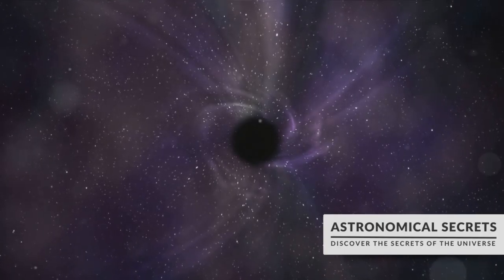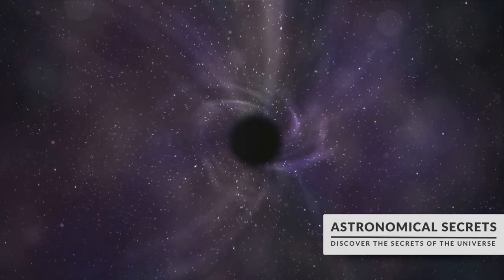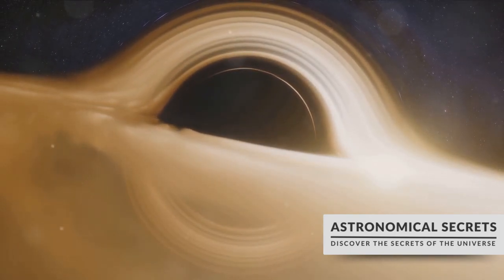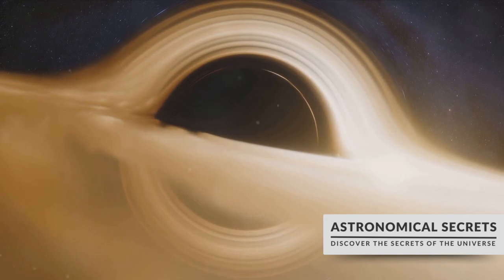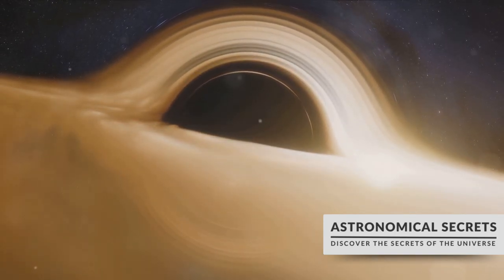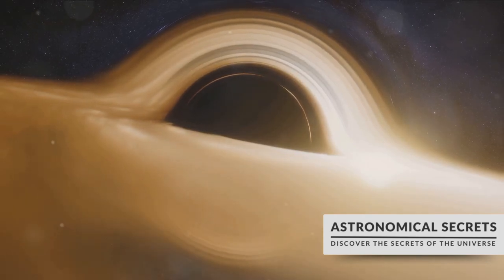But how does this work? Well, when a supermassive black hole is at the center of a galaxy, its immense gravitational pull affects everything around it. This pull can cause gas and dust to swirl into a disk around the black hole, creating a dynamic environment where stars can form.